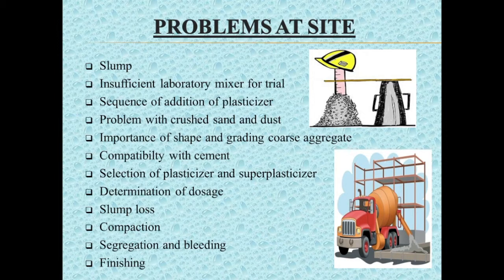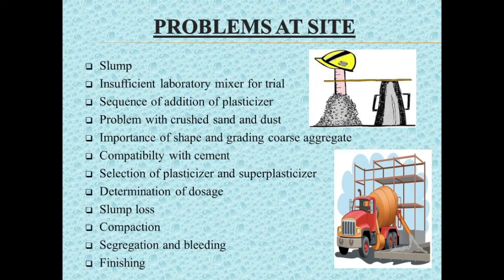Similarly, while casting cubes using highly plasticized concrete, compaction of cubes cannot be done in the usual method of vibrating or even tamping. If the casting of cubes is done blindly without understanding the behavior of such plastic concrete, segregation occurs in the cube mold. The top half of the cube mold consists of only mortar, divided of coarse aggregates, and such segregated concrete cubes show very low strength.